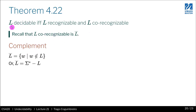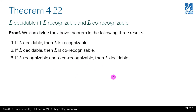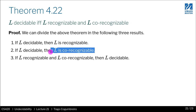What we need to show is: if L is decidable, we can go one way and the other way. We can simplify the whole proof into three sub-proofs. First, if L is decidable then L is recognizable, which is trivial. Second, if L is decidable then L is co-recognizable, which is also not very complicated. Third, the difficult part: if L is recognizable and co-recognizable, then it is decidable. Today we're going to see the first two.